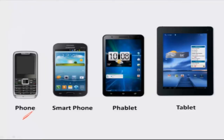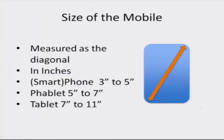If you look at the progression of these devices, the smallest is the phone in size, then the smartphone, then the phablet, and then the tablet. The size of a device is measured by the diagonal of the screen, normally in inches. A phone or smartphone is in the range of 3 to 5 inches, a phablet is bigger at 5 to 7 inches, and tablets are in the range of 7 to 11 inches.